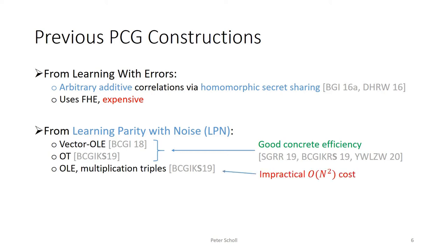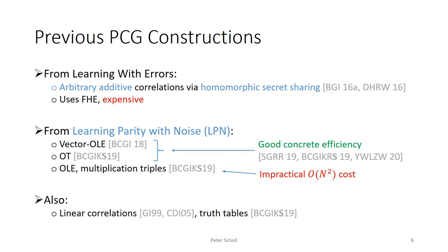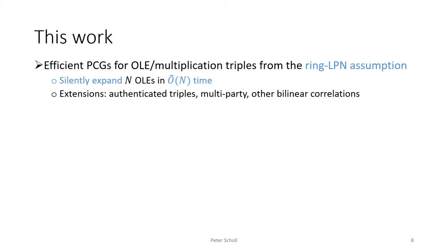LPN can also be used to construct more complex correlations like oblivious linear function evaluation, multiplication triples, and even higher degree correlations. Unfortunately, these constructions are not practical since they have at least a quadratic computational cost in n, where n is the length of the expanded correlated output. There are also older constructions of PCGs for simple linear classes of correlations, as well as a construction for one-time truth tables. The main contributions of this work are to construct efficient PCGs for OLE and multiplication triples based on the ring LPN assumption, with quasi-linear n runtime.